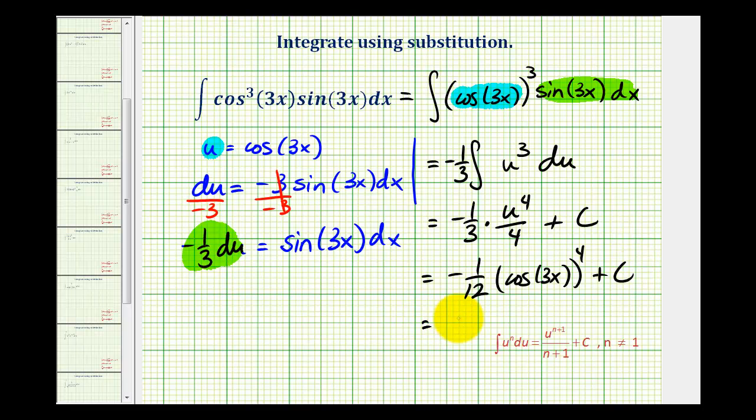Or, if we wanted to, we could write this as negative 1/12 cosine to the 4th 3x plus c.